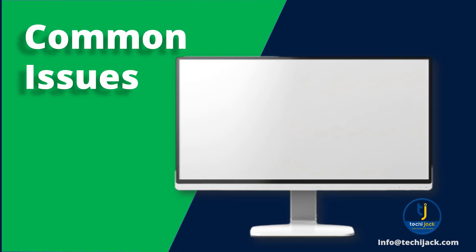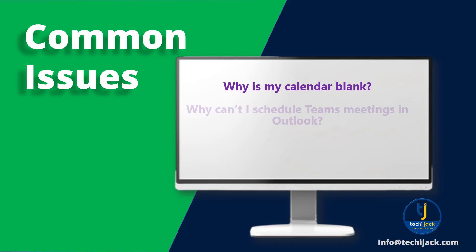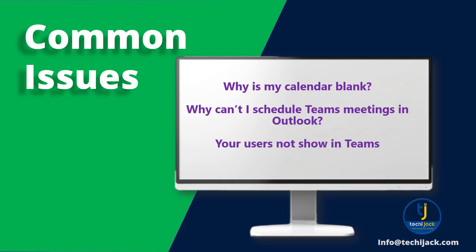Let's also look at common issues and misunderstandings. If your calendar is blank, that means Autodiscover is not published or the SSL certificate is not issued properly. If you can't schedule Teams meetings in Outlook, that means the Teams add-in needs hybrid modern authentication — if you haven't set that, you need to. And if a user does not show in Teams, Entra Connect Sync is missing or there is a UPN mismatch.